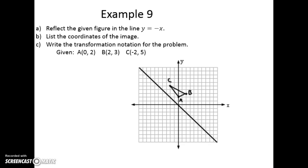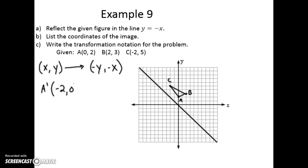We're given this triangle and we want to reflect it over that line. You could try to count, but it's easier to use the transformation rule. The rule to reflect over y = -x is to switch x and y and make them both negative. So a prime becomes (-2, 0), b prime becomes (-3, -2), and c prime becomes (-5, 2).